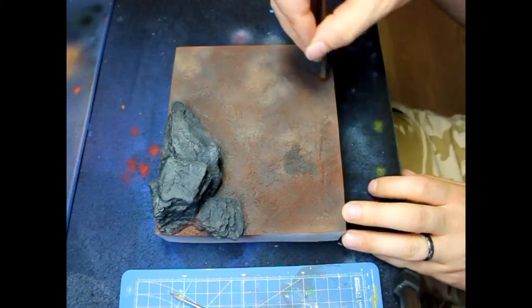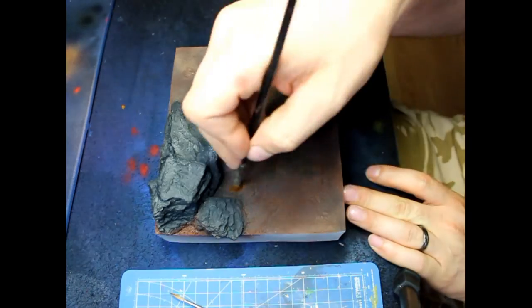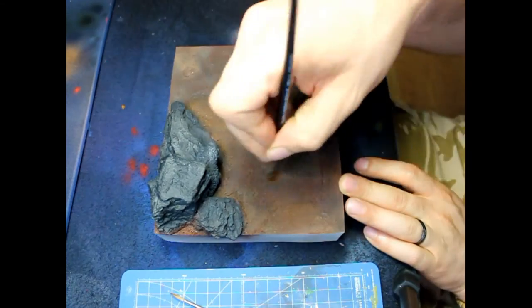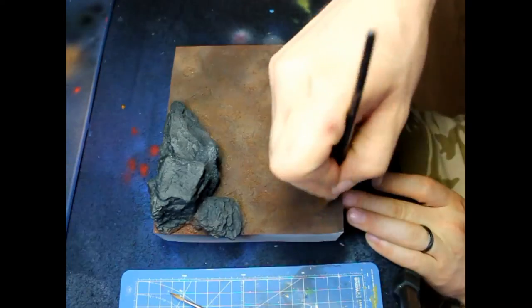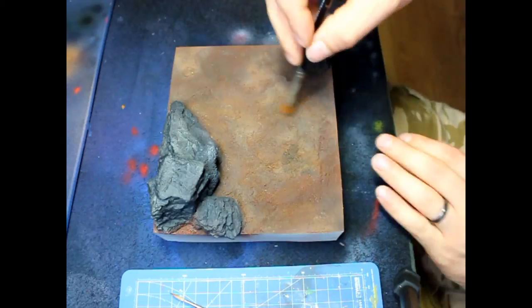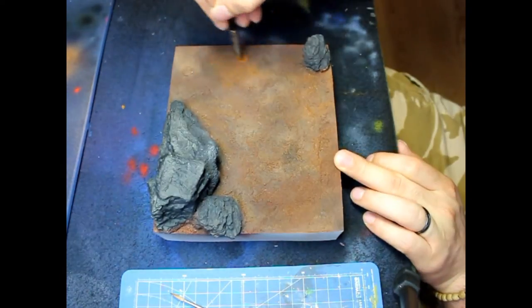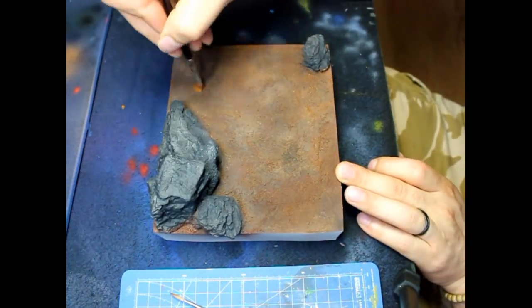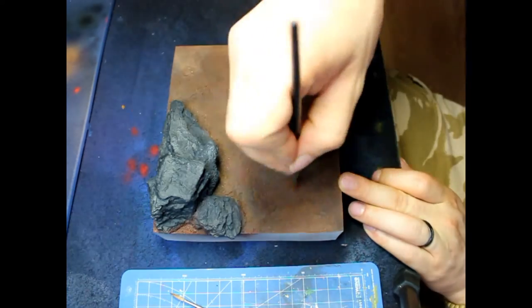Now on to the dry brush so basically I dry brush with three different browns. I used beastie brown heavy dry brush of beastie brown then after that lighter dry brush of snake bite leather and then after that finished it off with some bleach bone in some areas just to make all that the terrain not even into the texture it has and make everything and all the detail pop a little bit more.